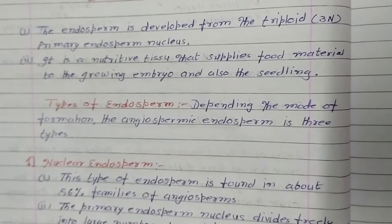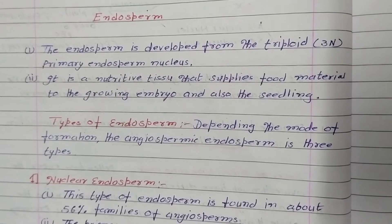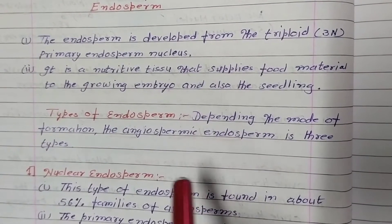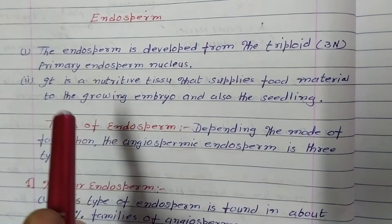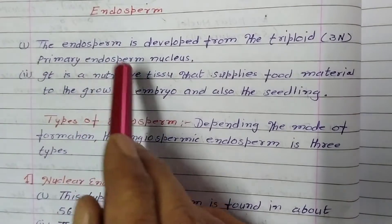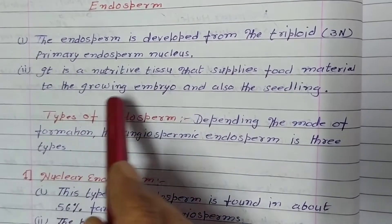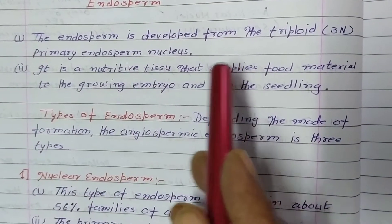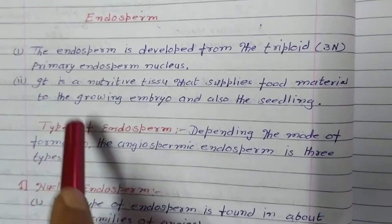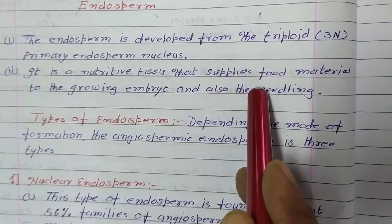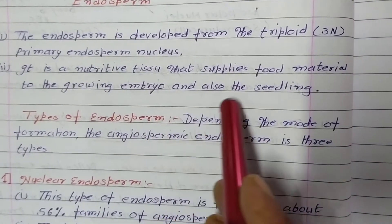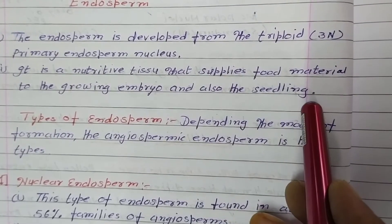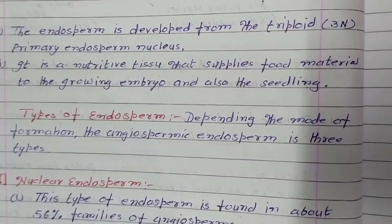Endosperm is a nutritive substance which develops from the triploid body and primary endosperm nucleus. The second male gamete fuses with the secondary nuclei and forms the primary endosperm cell, which develops into endosperm. It is a nutritive tissue that supplies food material to the growing embryo, and is also important for nourishment supply to the seedling.